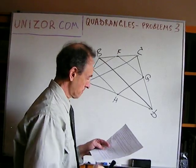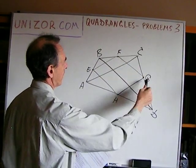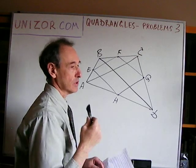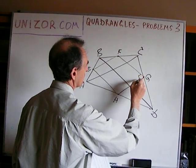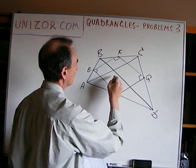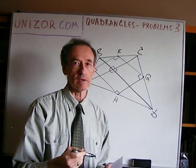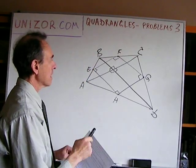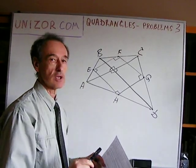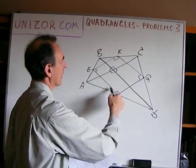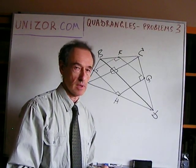For the midpoint quadrangle to be a rectangle: its sides are parallel to the corresponding diagonals, so for the sides to be perpendicular to each other, the corresponding diagonals must be perpendicular. If the diagonals of the original quadrangle are perpendicular to each other — not necessarily equal — that is sufficient for the midpoint quadrangle to have all right angles and thus be a rectangle.